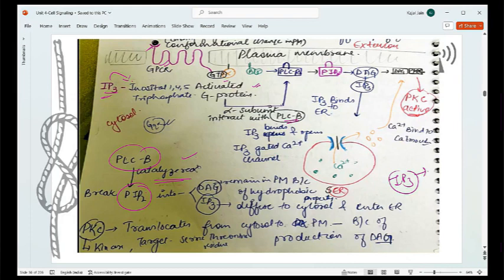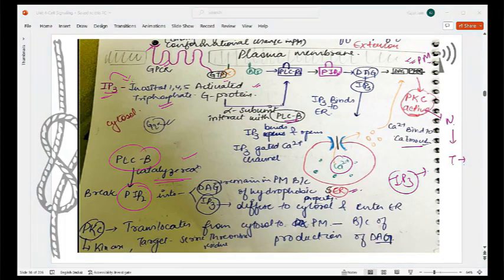DAG is diacylglycerol. IP3 is your inositol 1,4,5 triphosphate. Now IP3 gets detached from your plasma membrane, it reaches to your smooth endoplasmic reticulum, opens up or helps in opening of your calcium 2+ ion channels. Calcium 2+ concentration increases in the cytosolic area. Calcium binds to calmodulin. Calmodulin will be reaching to your calcium reaches to your plasma membrane with the help of calmodulin where it will be activating your PKC, that is protein kinase C, which will be going to the nucleus, reaching the nucleus and then helping in the initiation of the response of the same, right? I hope it's clear. Very very simple, right?